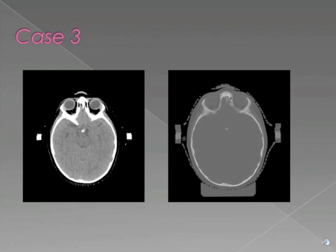In Case 3, we have two axial CT images. This patient demonstrates calcifications within the brain. This case pretty much reduces to a test of anatomy — if you correctly localize these calcifications to the sella turcica, then it is not too difficult to conclude that these likely represent calcifications within a craniopharyngioma.